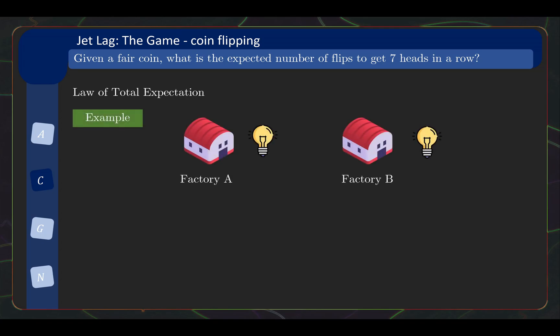So in this example, let's say there are only two factories in the whole world that make light bulbs, factory A and factory B. Now the light bulb made by factory A on average last 5000 hours. And the light bulb made by factory B on average last 4000 hours. And suppose that the market share is that factory A takes 60% of the market and factory B takes 40% of the market.